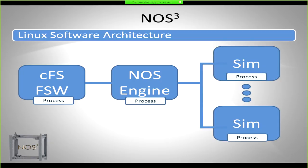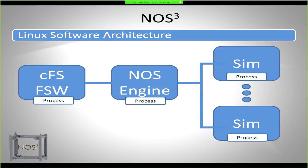Just to be clear on what it is: our flight software is a Linux process. NOS Engine — this is the first time I'm mentioning it — think of it as middleware that connects all the simulators together as part of NOS Cubed. NASA Operational Simulator is our product line, and Engine is middleware we've developed that we use on all of our other simulators — like GIST for James Webb and SLS. Think of it as middleware that bridges the gap between flight software on the left and your simulators on the right.